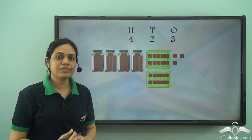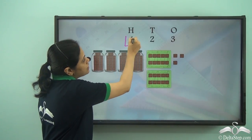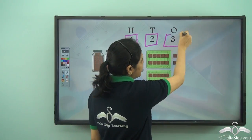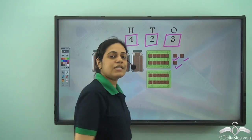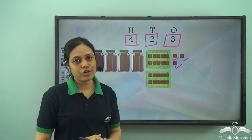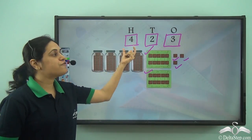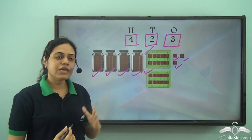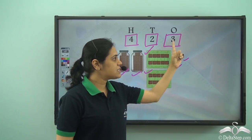Let us understand this with the help of a number. If this is the number 423, it represents 4 hundreds, 2 tens, and 3 ones. So this 3 represents 3 single cookies, 2 tens represents 2 blocks of 10 cookies, and 4 hundreds represents 4 blocks of 100 cookies. So this is the meaning of the number 423: 4 hundreds, 2 tens, and 3 ones.